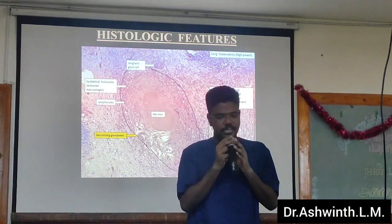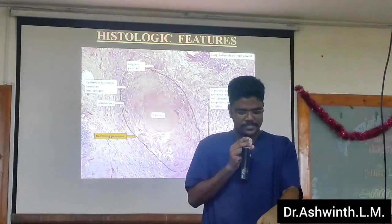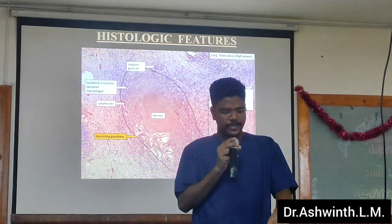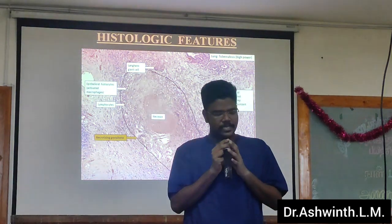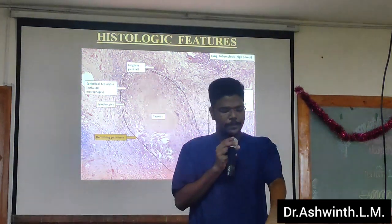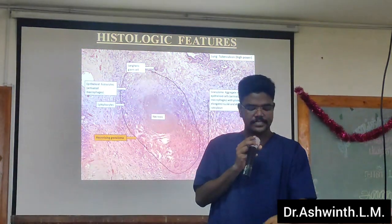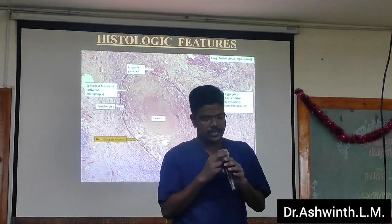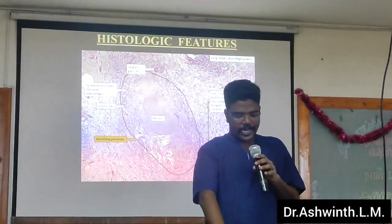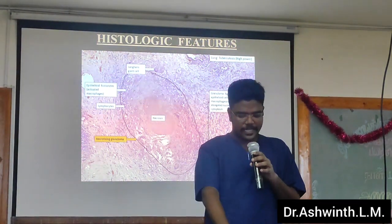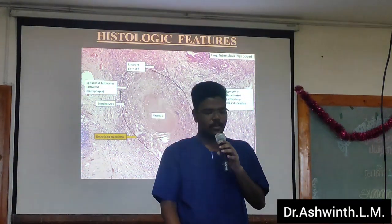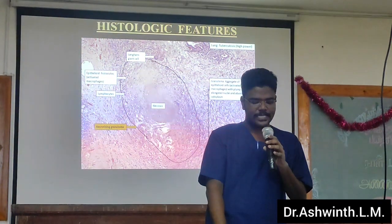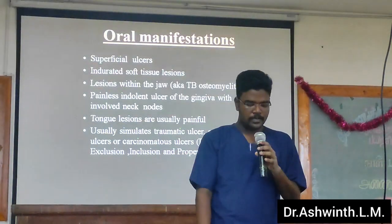You can see the histological feature. There is a central area of caseous necrosis surrounded by lymphocytes, and there are also epithelioid histiocytes. Histiocytes are macrophages found in tissues. You can also see an aggregate of epithelioid cells with one elongated nucleus and abundant cytoplasm, which we call a Langhans giant cell.